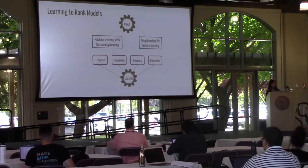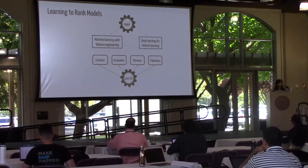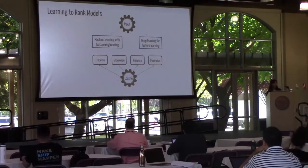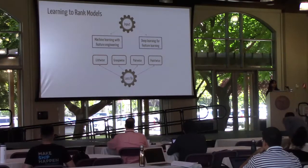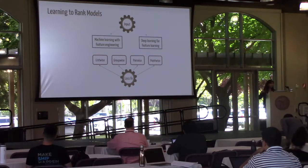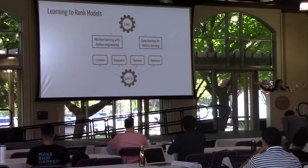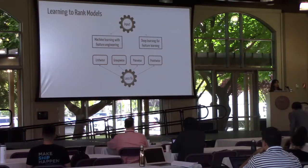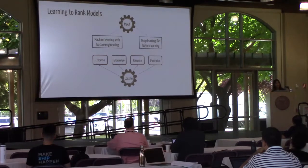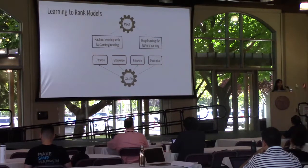There are so many learning-to-rank models which can be categorized from different perspectives. They can be categorized based on how a model's input is represented. Based on this, we can divide them into two groups. The one group shown on the left side uses human-engineered features, and the other is the more recent models that can learn features from queries and documents as well.